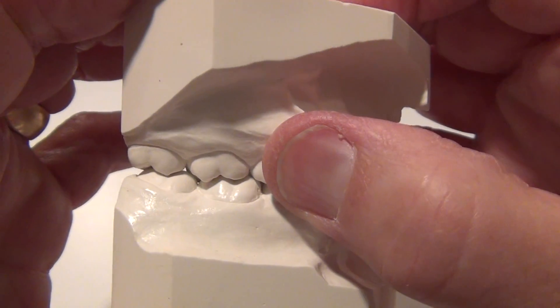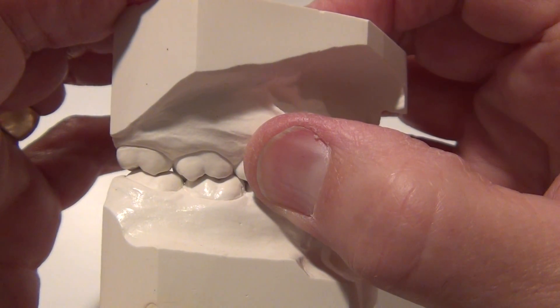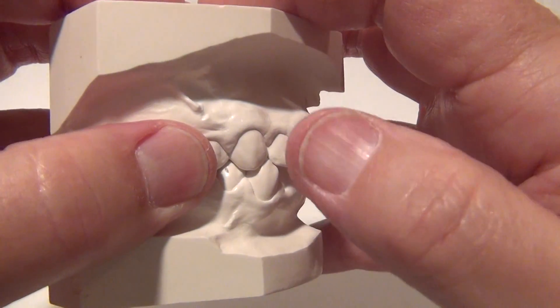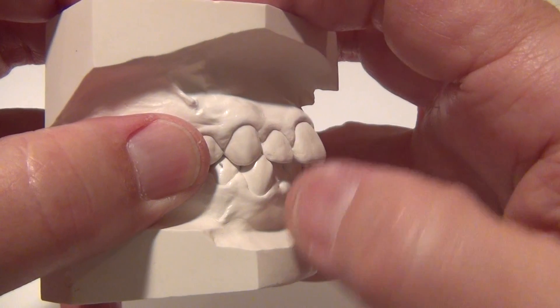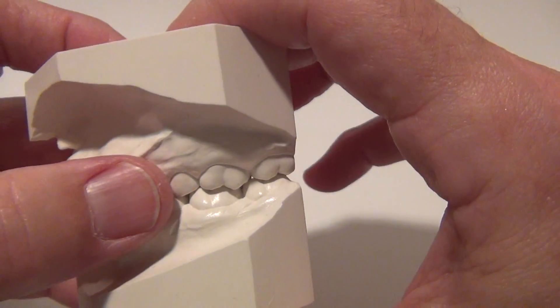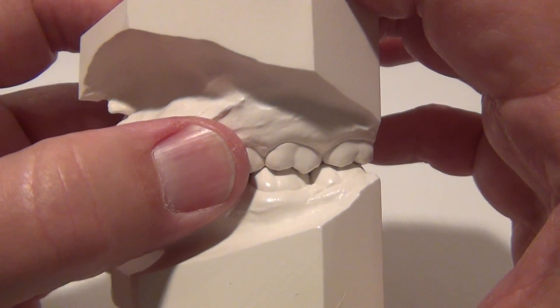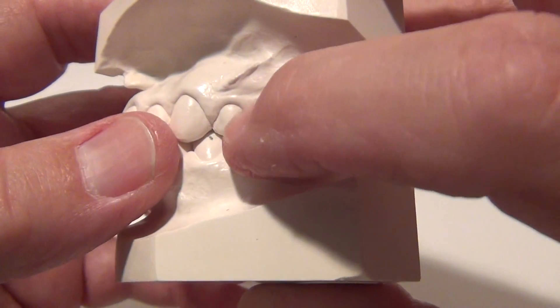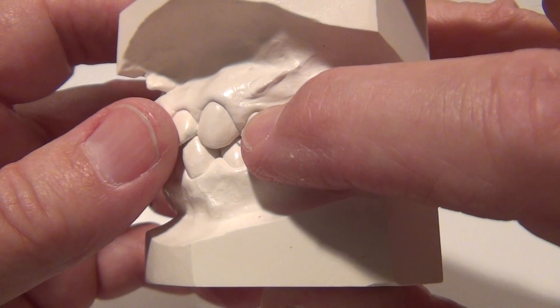Again, visually, right side, class 1 molar. Again, visually, class 1 cuspid, right side of course. Again, visually, left side, class 1 molar. Again, visually, class 1 cuspid.